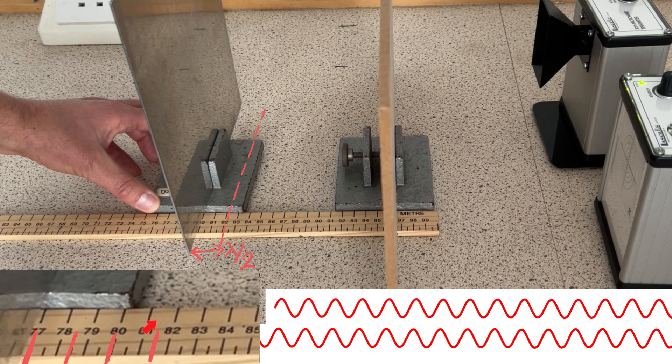I marked the positions of constructive interference as being one and a half centimeters apart, which means one and a half centimeters is half a wavelength, which means the wavelength is three centimeters.